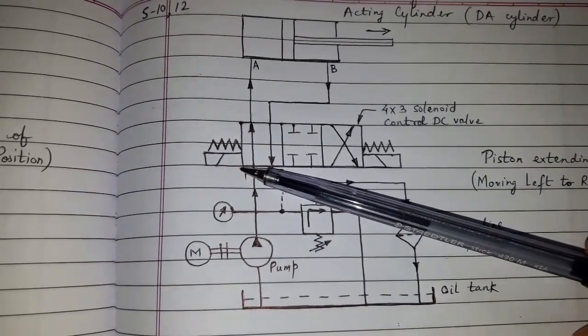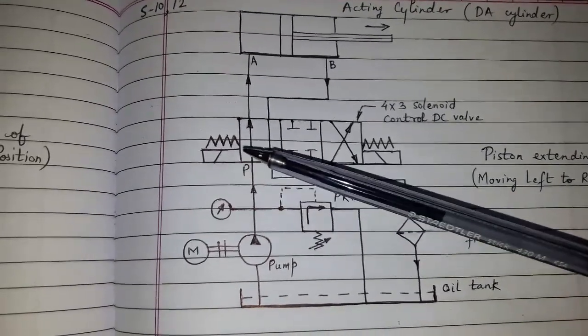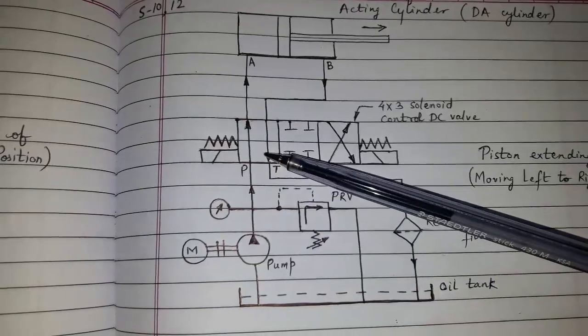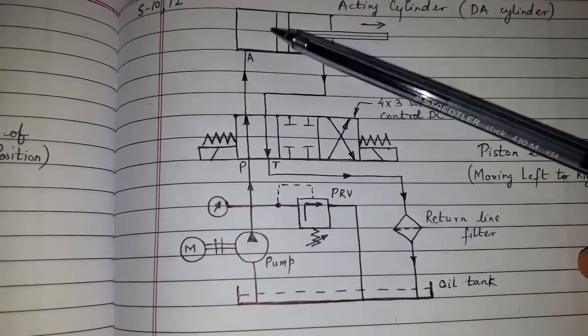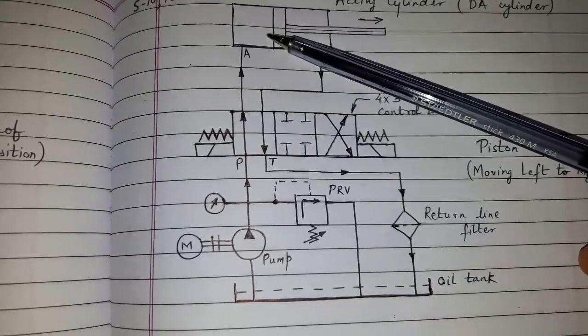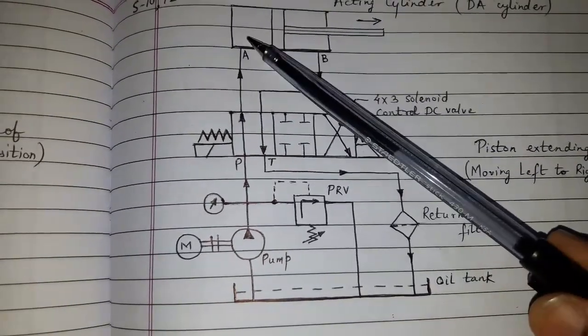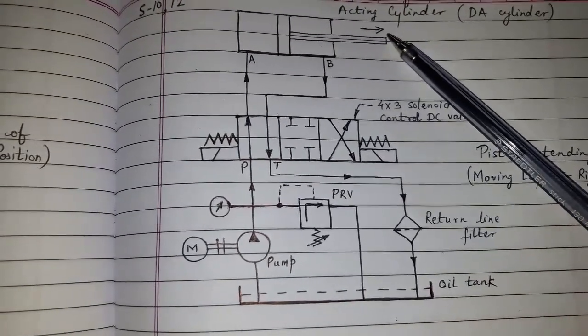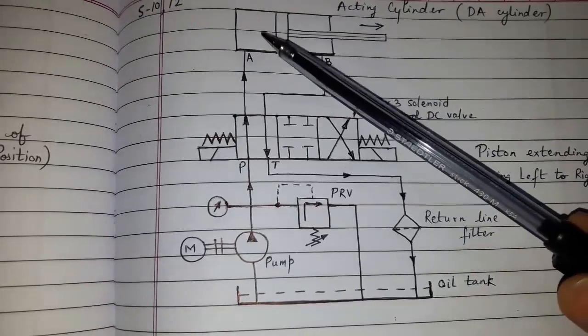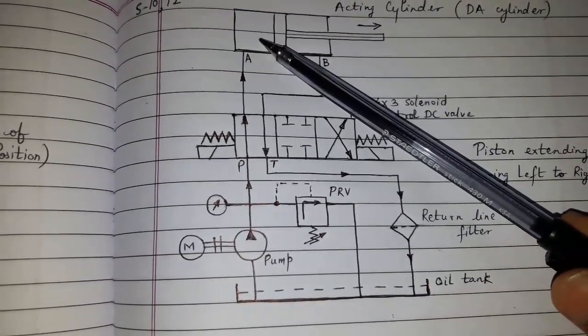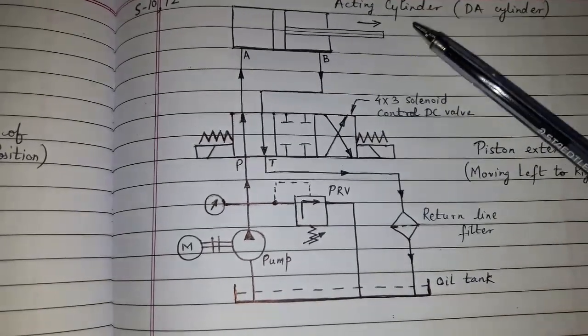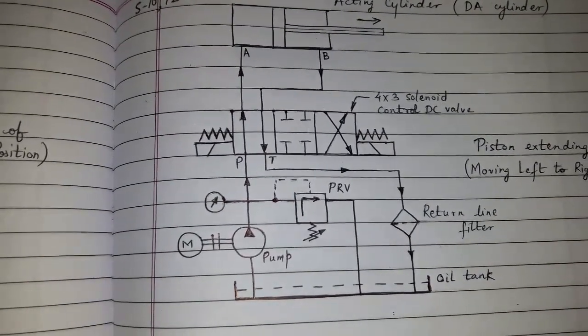The solenoid valve operates at set value and pressurized oil will enter port A into the DA cylinder. Piston will move from left to right. Since oil is admitted on the front face of the piston, the movement is called piston extending.